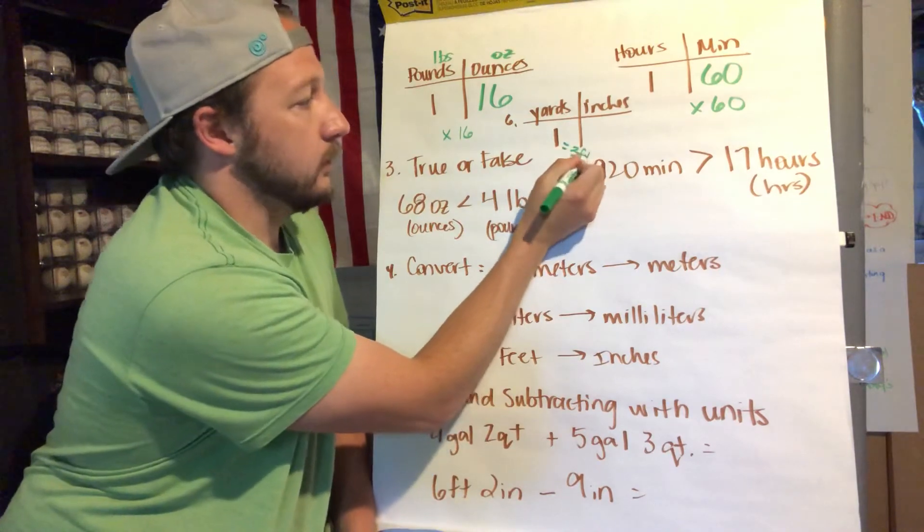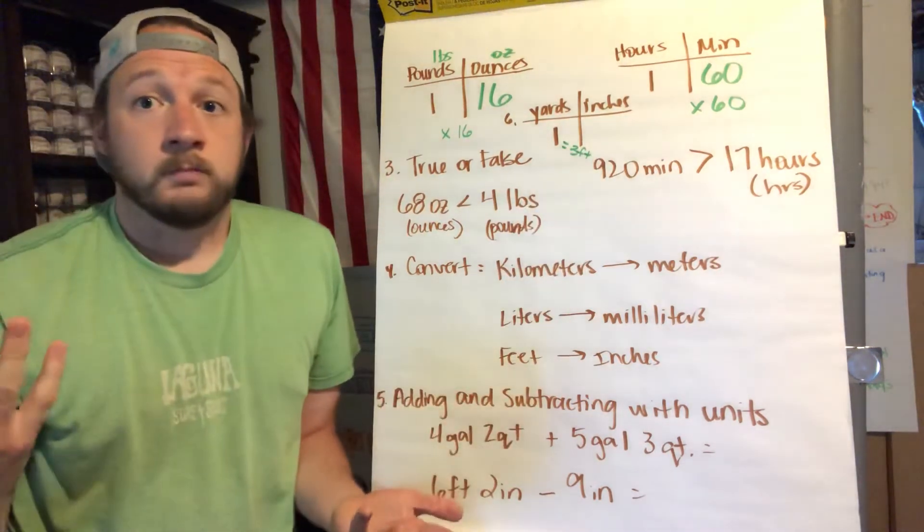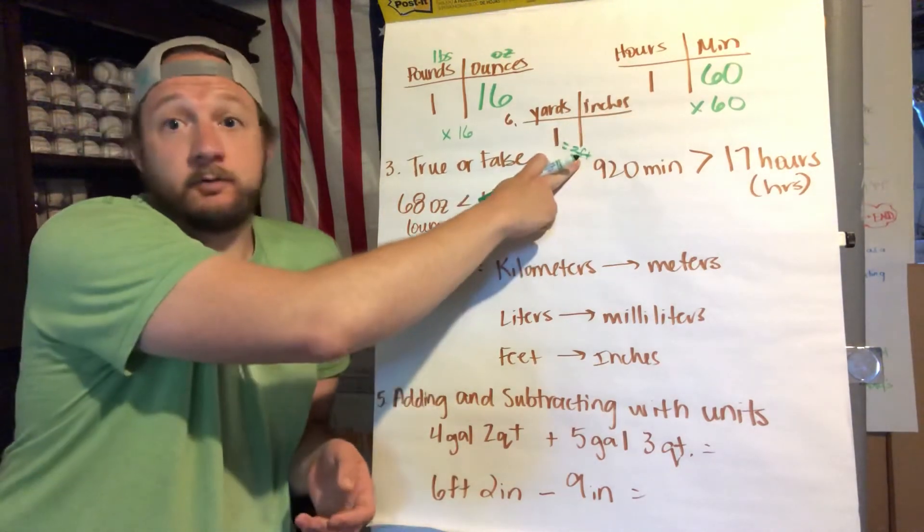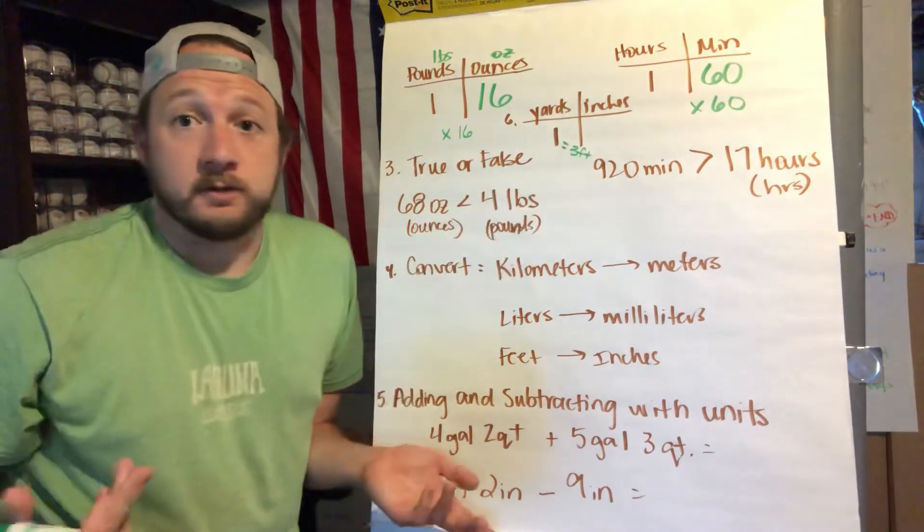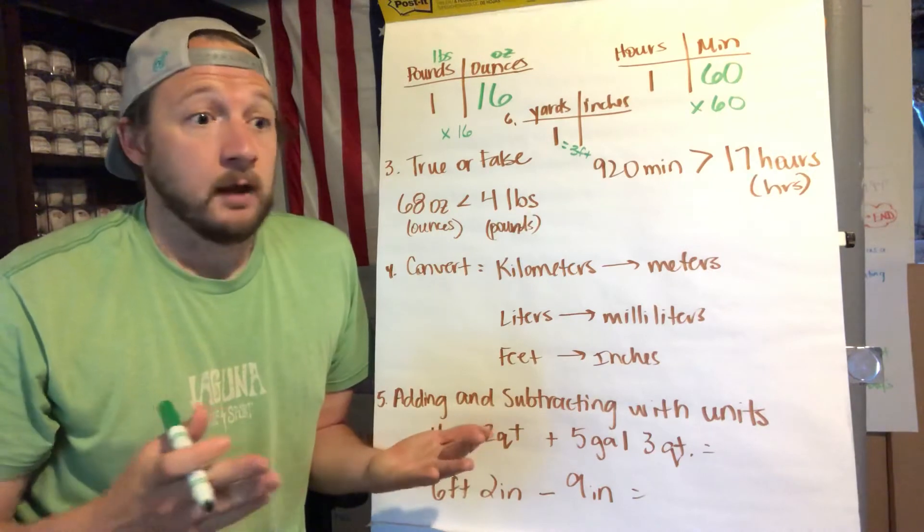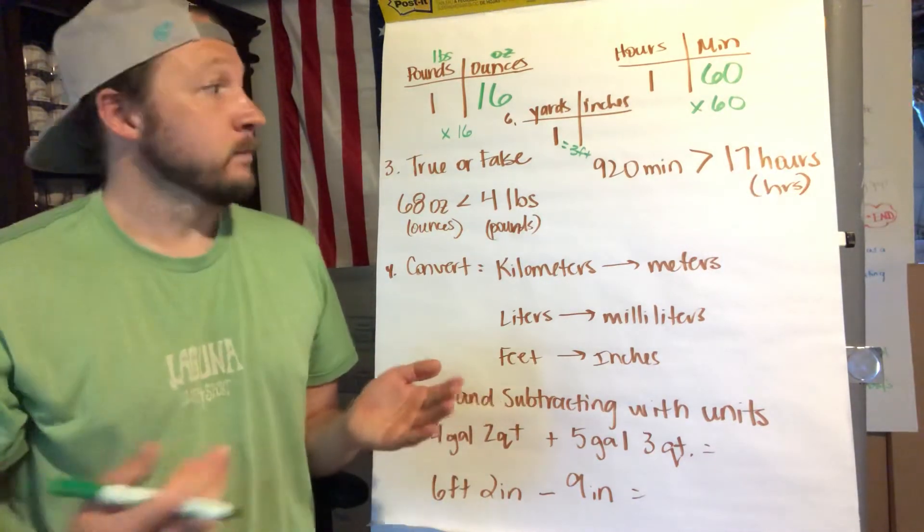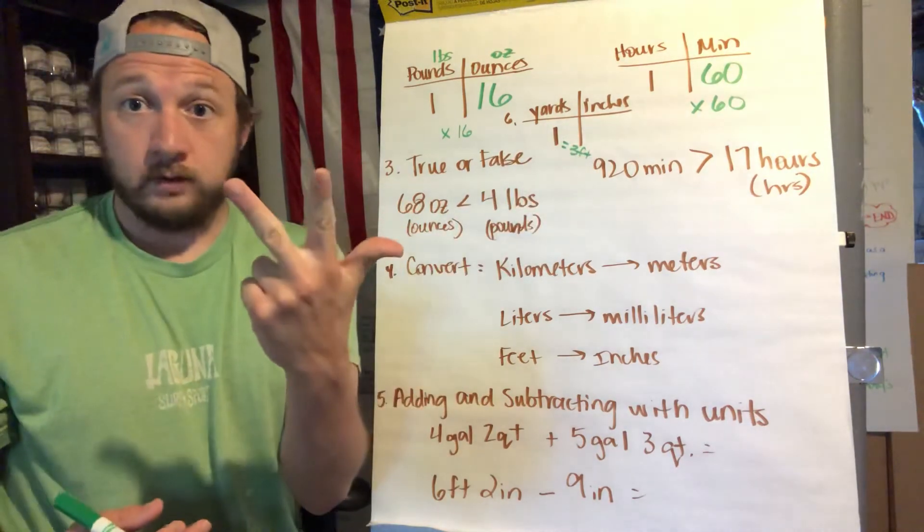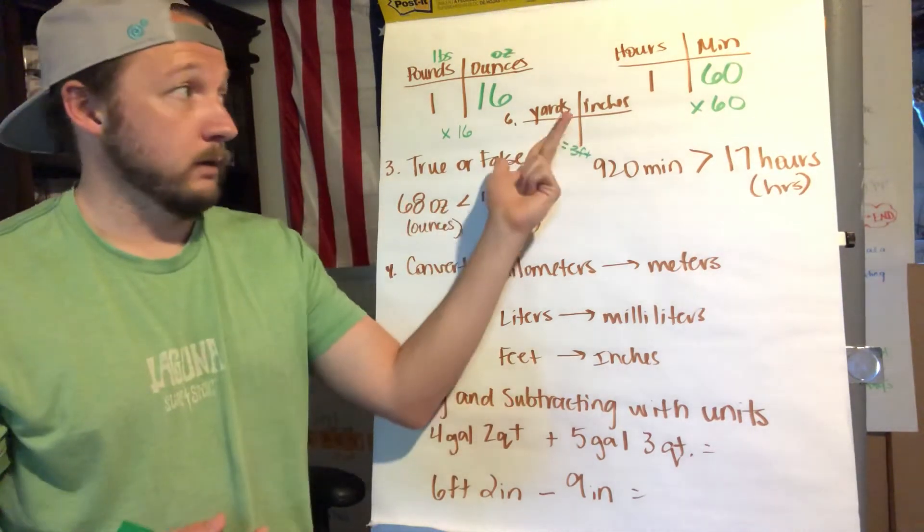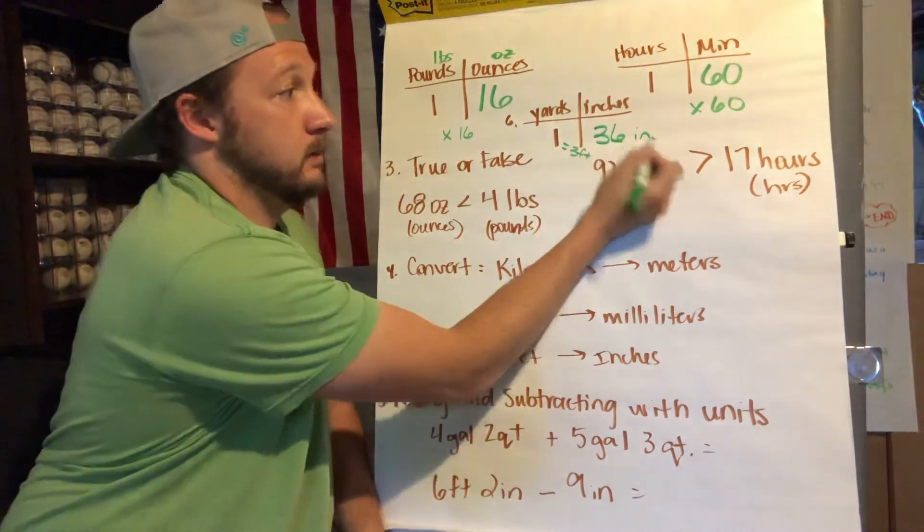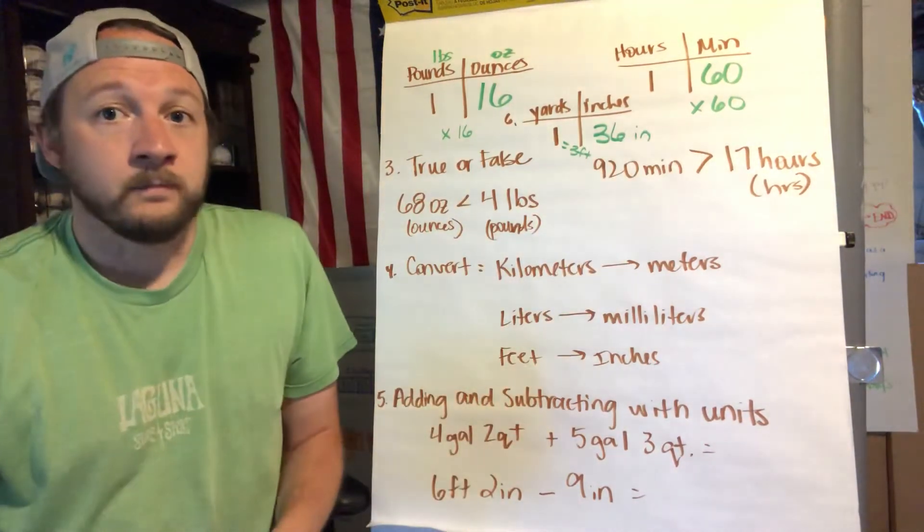Because here is 60 divided by 60 would be one. Now I'm going to get to this one right now. This one says yards and inches. This is kind of combining three units into one chart. Now a yard everyone knows is, or should know, is three feet.